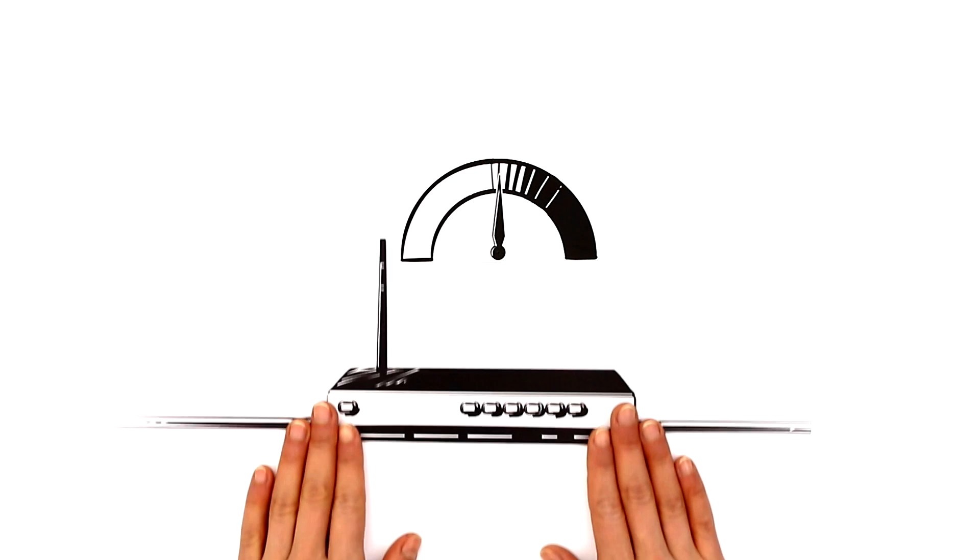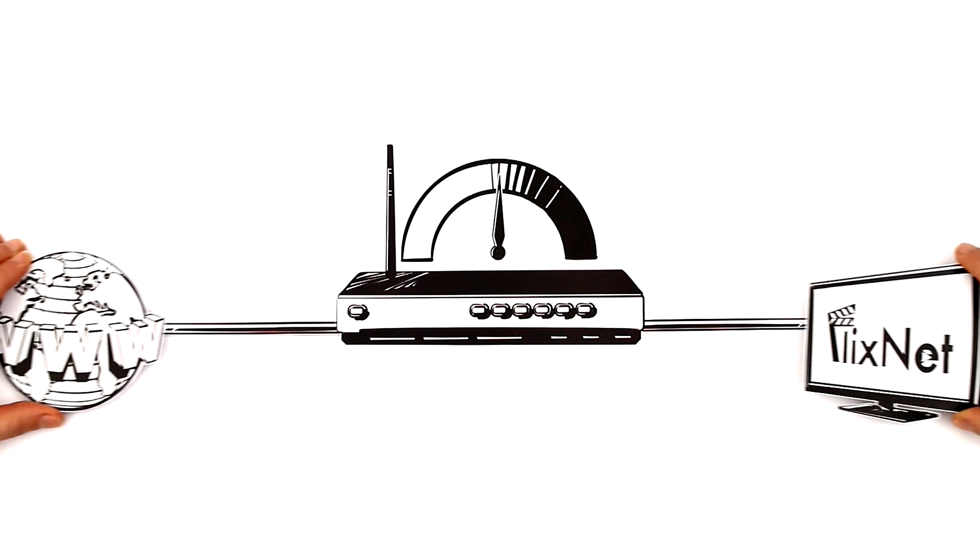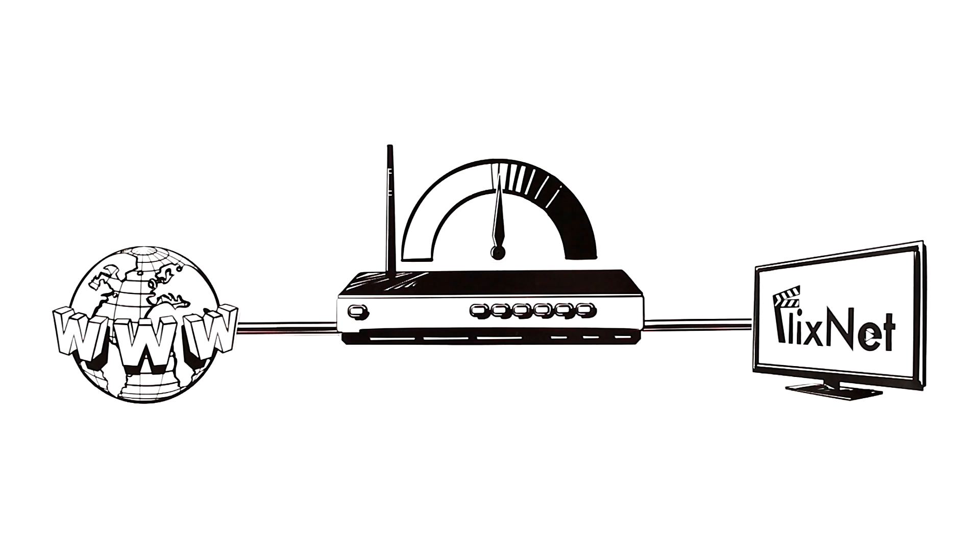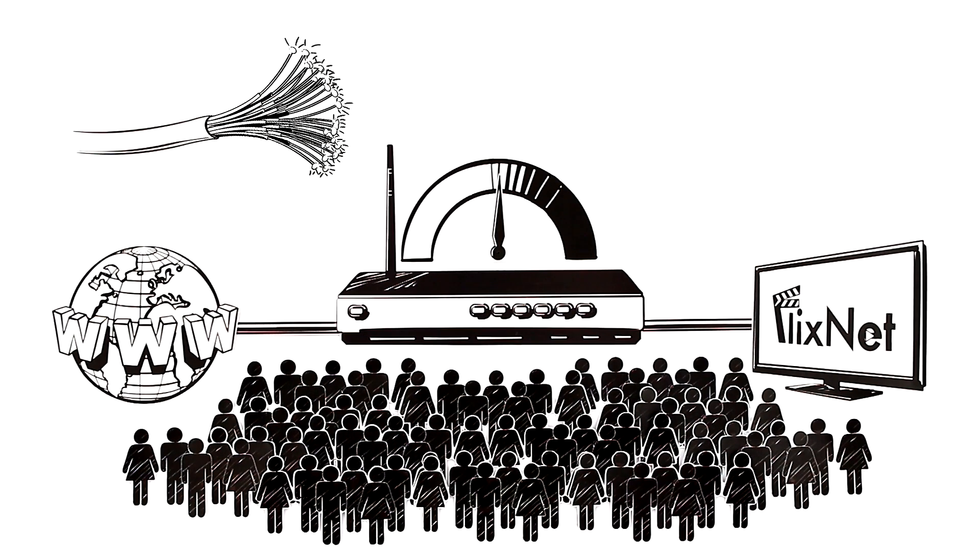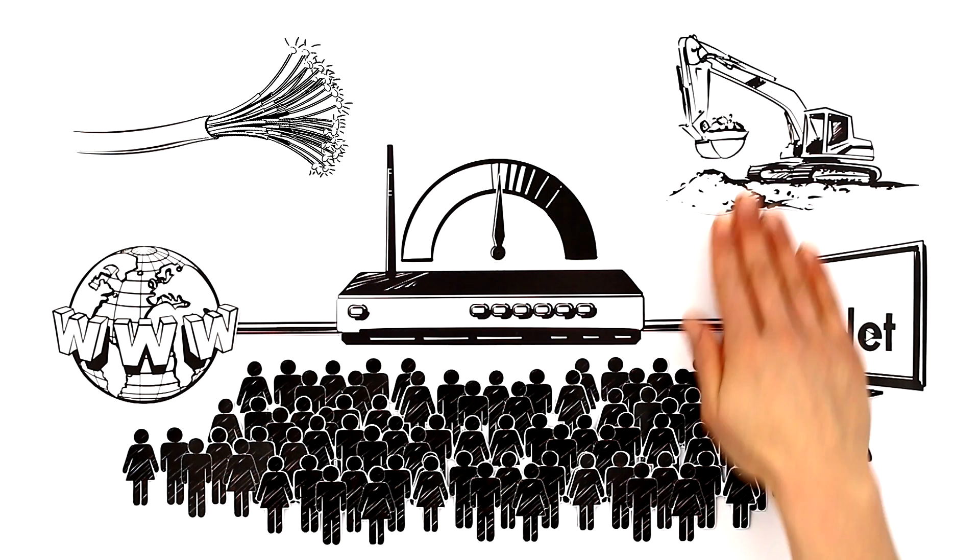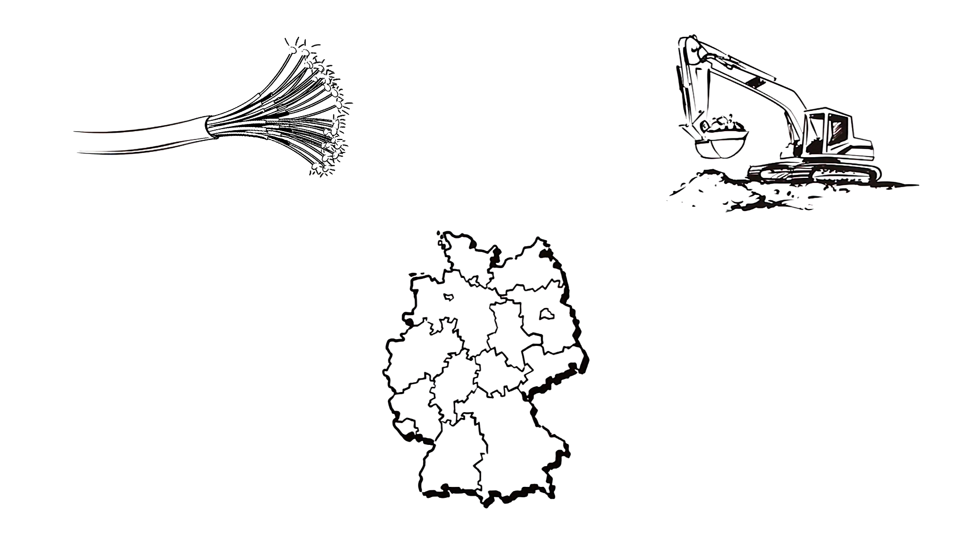Of course, this only works if the internet connection is fast enough. And so, with the increasing number of users, the network infrastructure has to be adjusted and upgraded accordingly. And that's where it gets interesting. Because in Germany, upgrading the network infrastructure is the job of the federal states, and progress here is fairly slow.